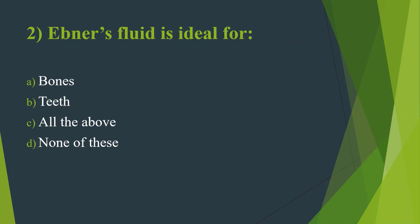Second question: Ebonyer's fluid is ideal for which tissue? Option A: Bones. Option B: Teeth. Option C: All of the above. Option D: None of these. Here the answer is Option B — Teeth. Ebonyer's fluid is a decalcifying fluid. Decalcification is the process of removal of minerals — that is calcium — from the tissue.